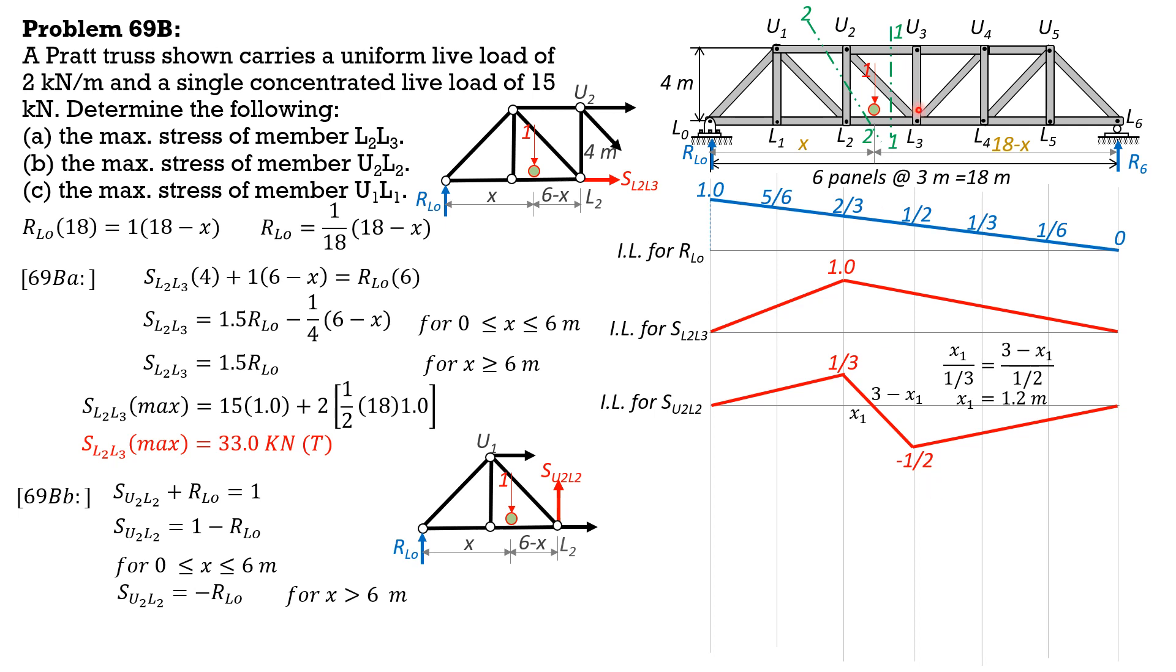Remember, for the total stress in U2L2 for the two side trusses. So that's 1.2 meters. This is 1.8 meters. Therefore, the negative value is greater compared to the positive value. The maximum stress in U2L2 is negative or compression. So SU2L2 max is equal to 15 times negative 1 half plus 2 kN per meter times area of this negative part. 1 half of 10.8 times 3.9 plus 1.8, 10.8 times negative 1 half. So it is negative. Let's make it positive. But level, it is compression. SU2L2 max is 12.9 kN compression.